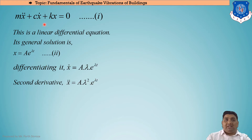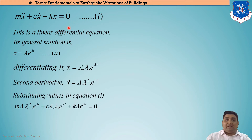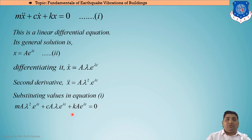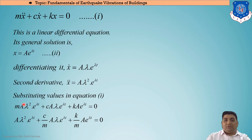Substituting all three cases into equation 1: M(Aλ²e^(λt)) + C(Aλe^(λt)) + K(Ae^(λt)) = 0. Dividing both sides by M, the M cancels, giving C/M and K/M terms. Taking Ae^(λt) as common and dividing both sides by it yields: λ² + (C/M)λ + K/M = 0.